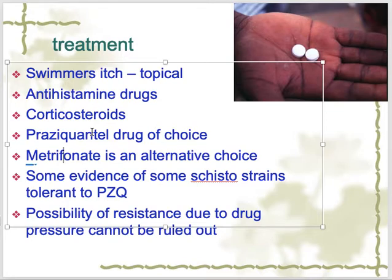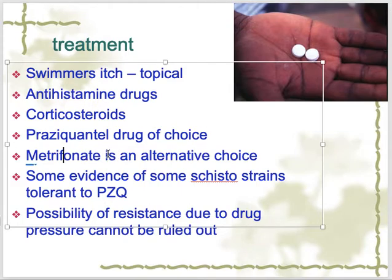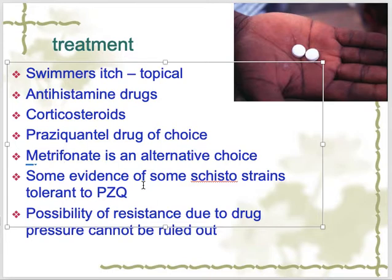For schistosoma japonicum, praziquantel is again the mainstay of treatment. We give one dose or two to three divided dosages. Patients give a good response. Other drugs exist but praziquantel is very important simply because it has good anti-schistosomal action and is effective against all schistosomal species.